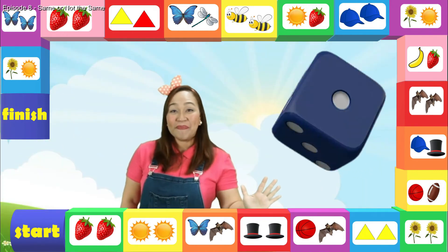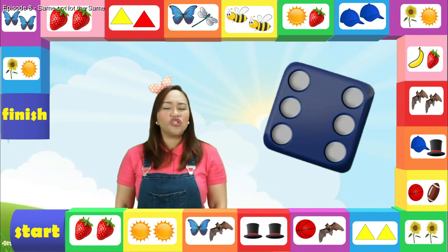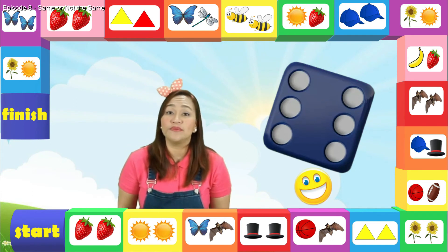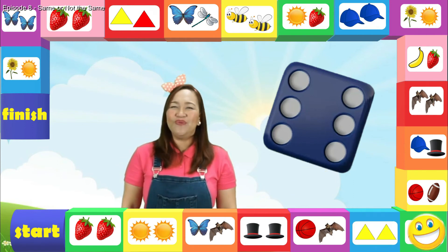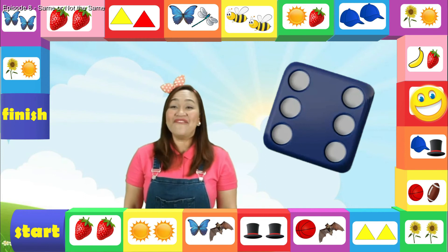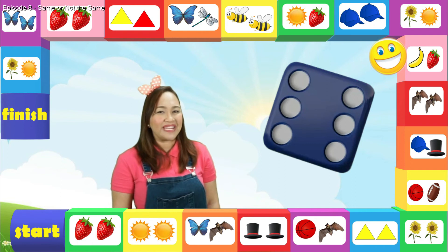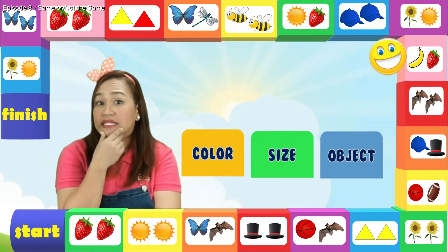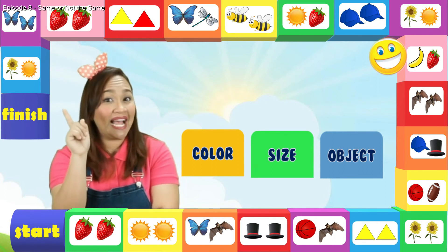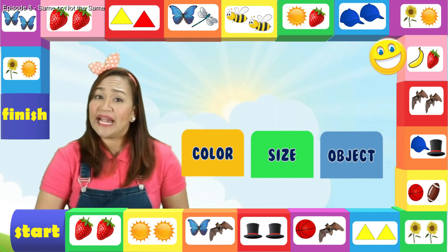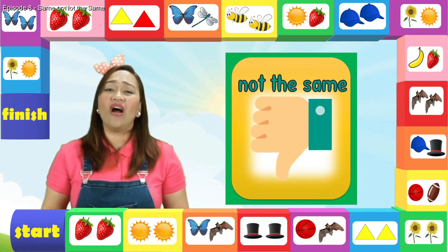Roll the dice again. Stop. It's number six. We need to take six steps and see the objects whether it's same or not the same. One, two, three, four, five, six. It's the banana and the strawberry. Is the banana and strawberry the same color? Is the banana and the strawberry the same size? Is the banana and strawberry the same objects? That's right, they are different.